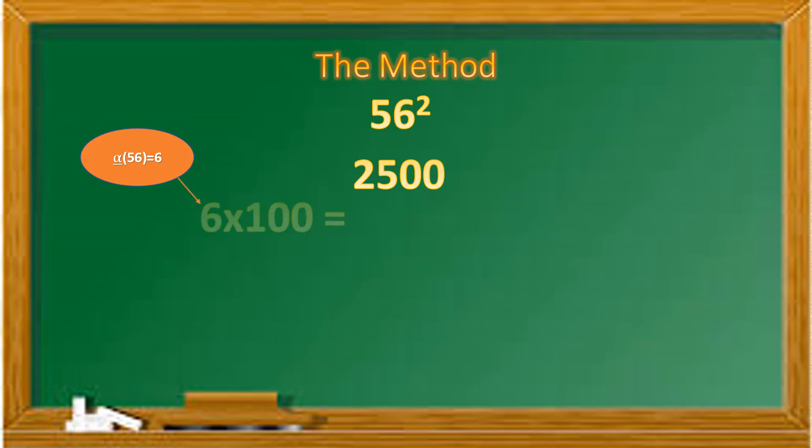The first of which will be the hundred multiple of 6, that is 600, and the second will be the square of 6, that is 36. Adding all these three numbers will give us 3136, which is the square of 56.